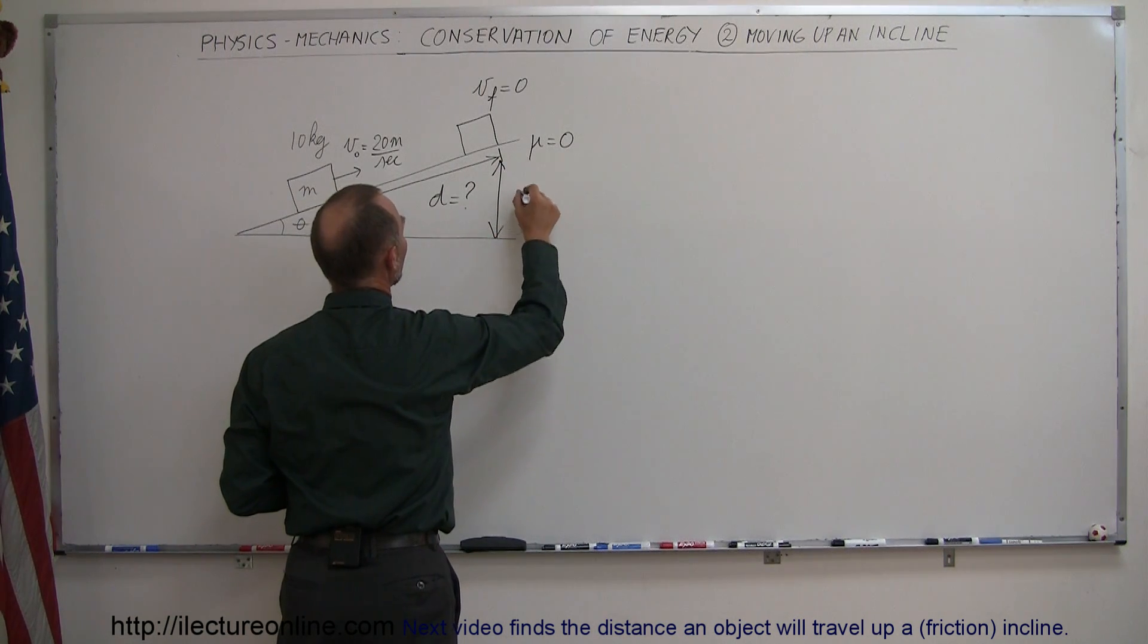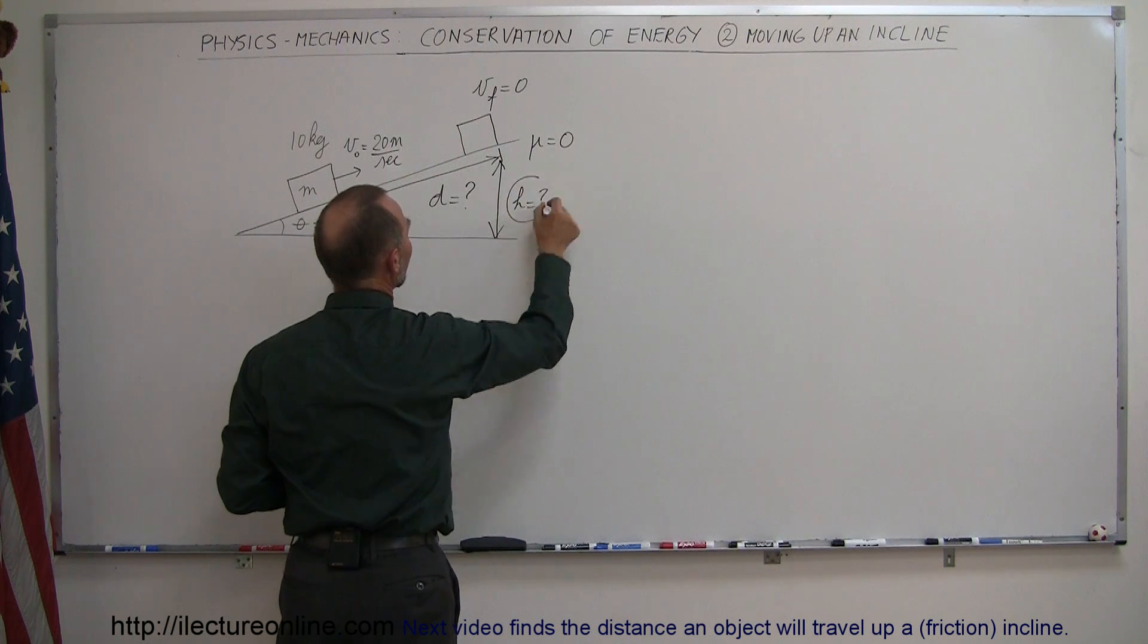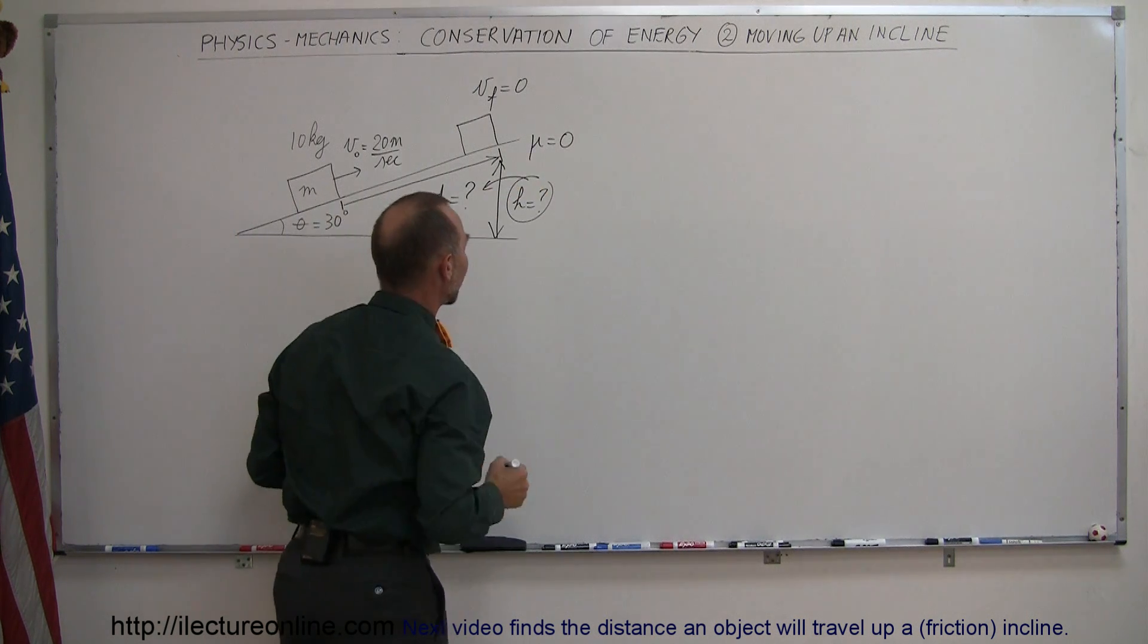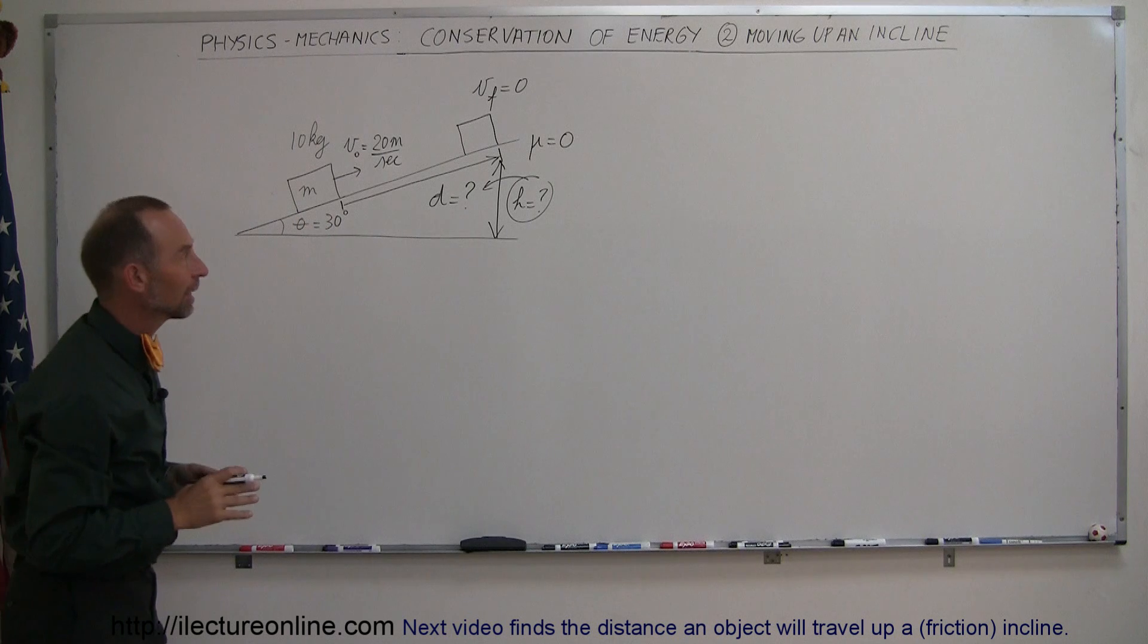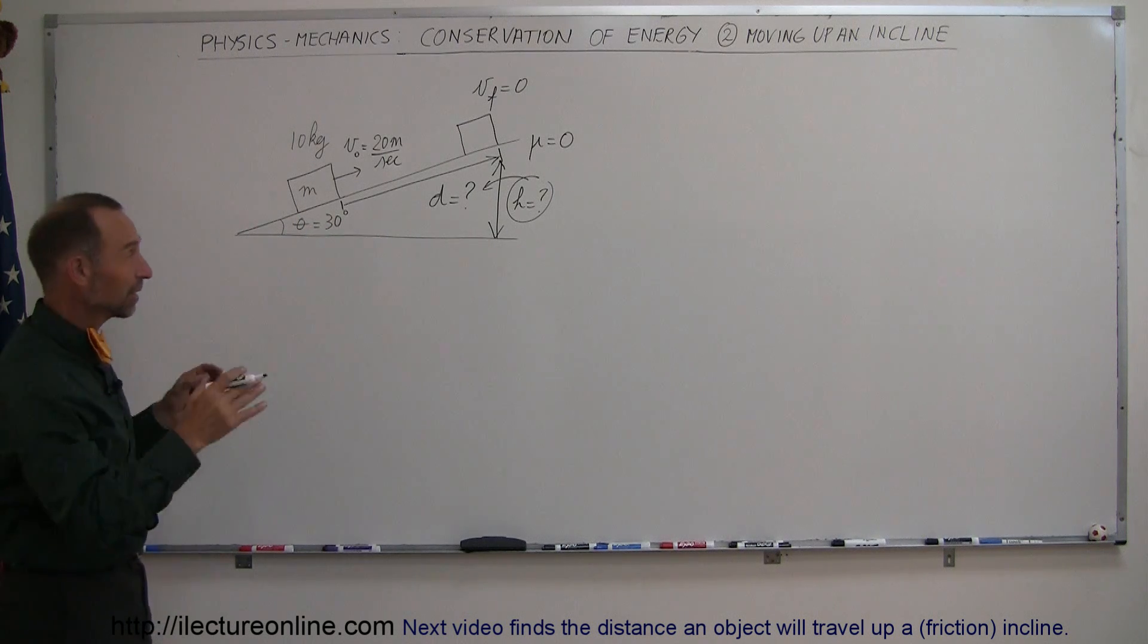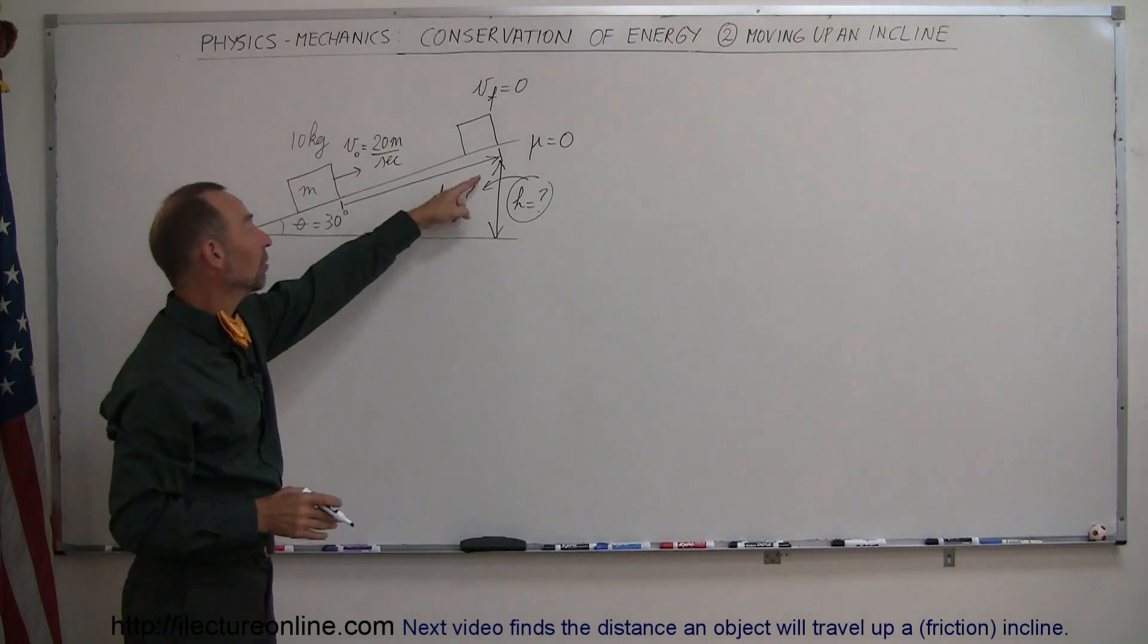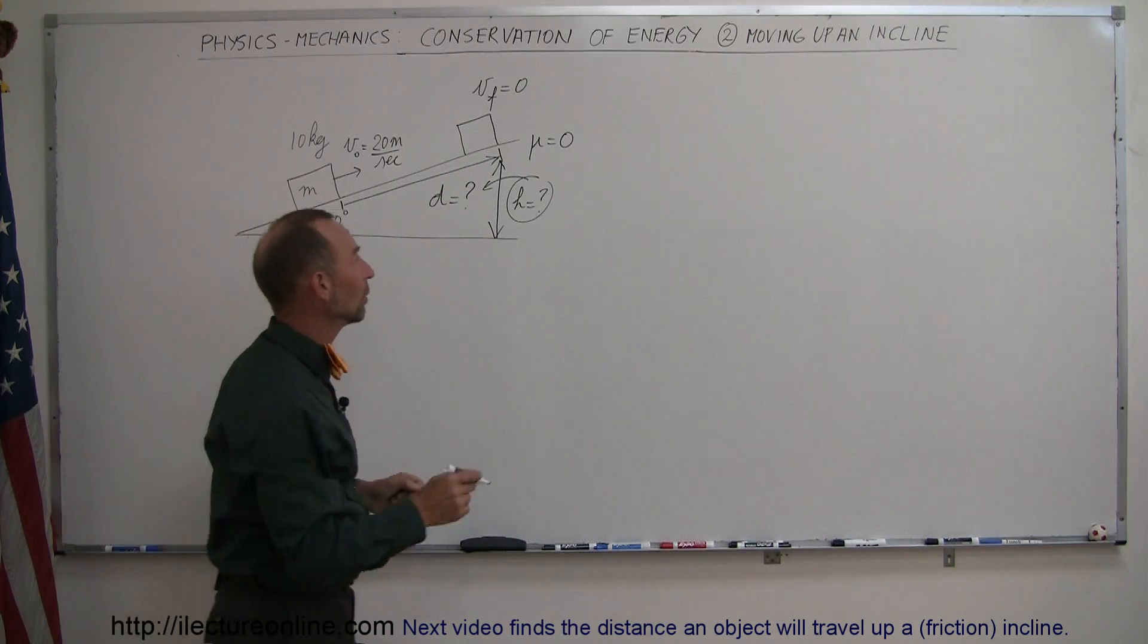So we can probably go ahead and solve for this first and then go ahead and convert that to the distance along the incline, because remember on the triangle like that there's a relationship between the hypotenuse, the opposite side, and the angle.